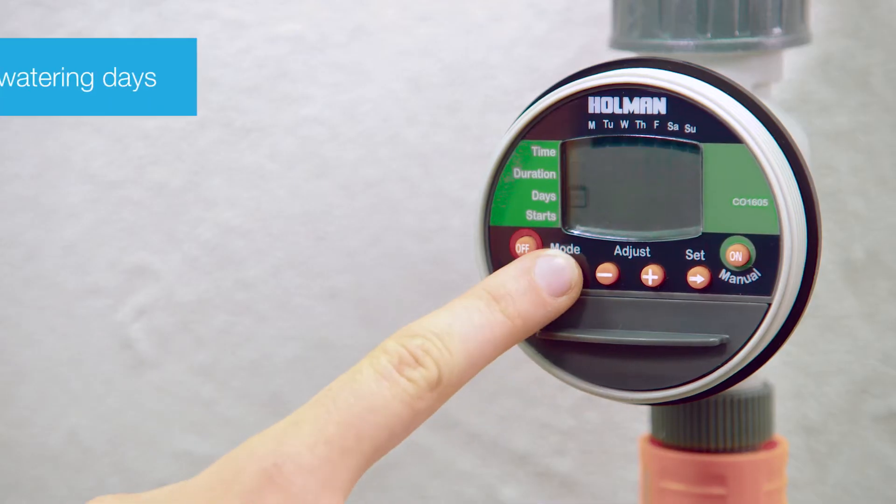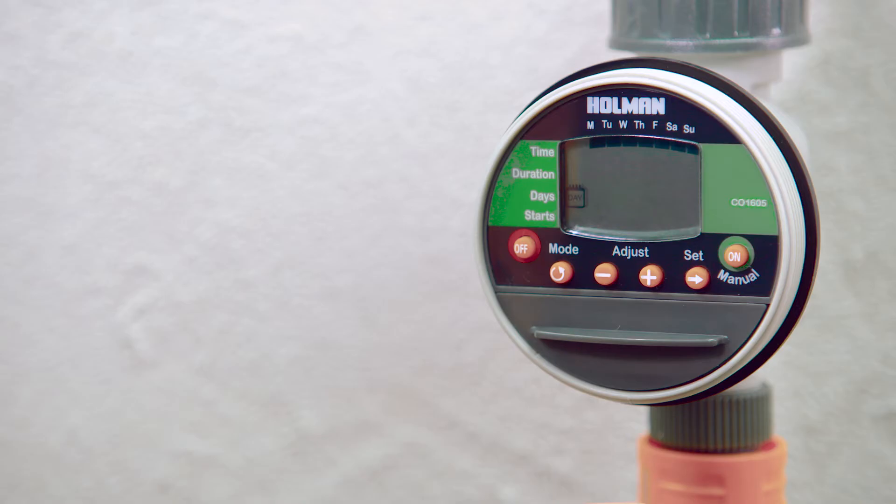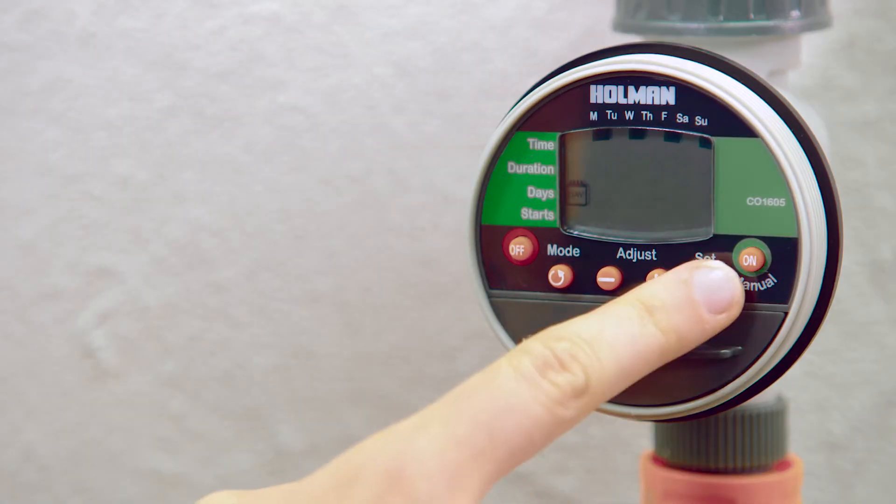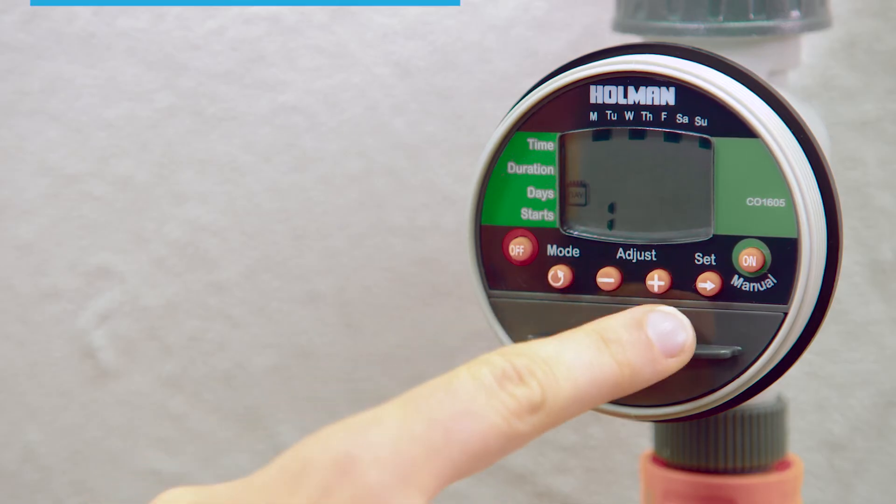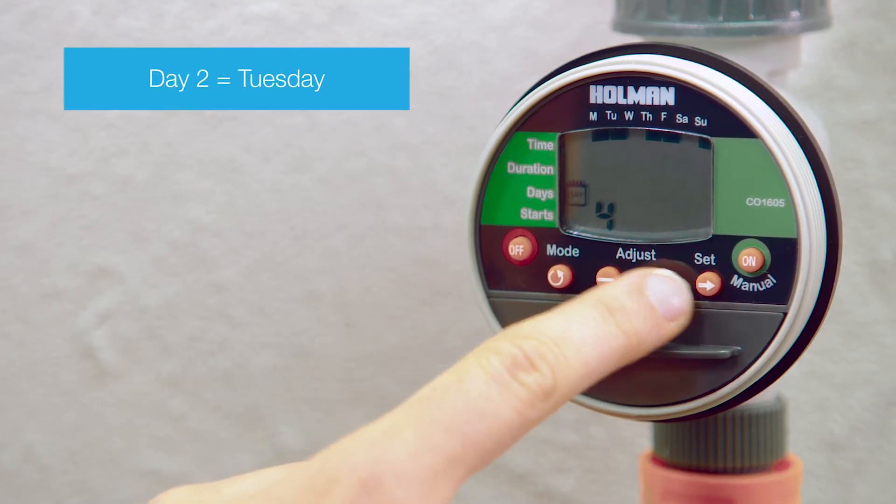Next, press mode to set watering days. This will allow you to set each day of the week that you want to water. Press the set button and day one or Monday will be flashing. To keep Monday, press the plus. To remove, press the minus. Repeat this process to set each day of the week.